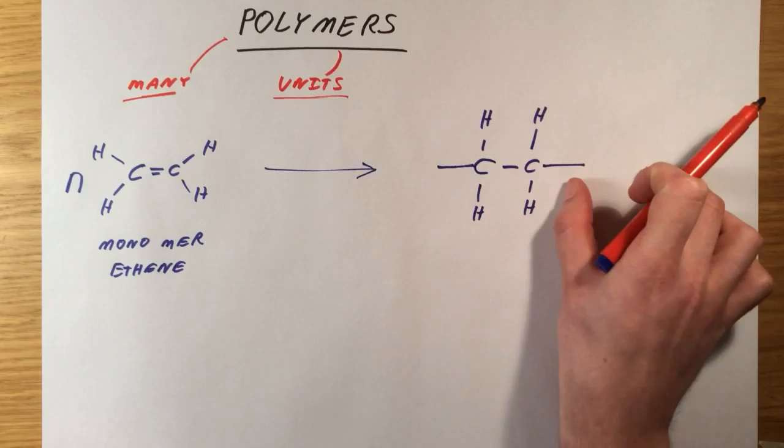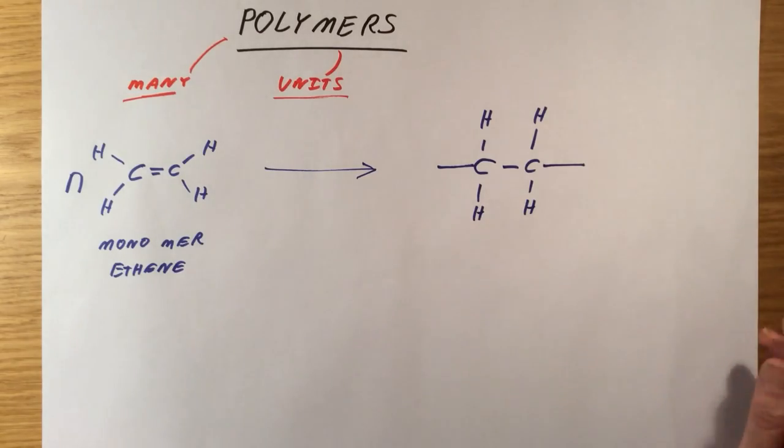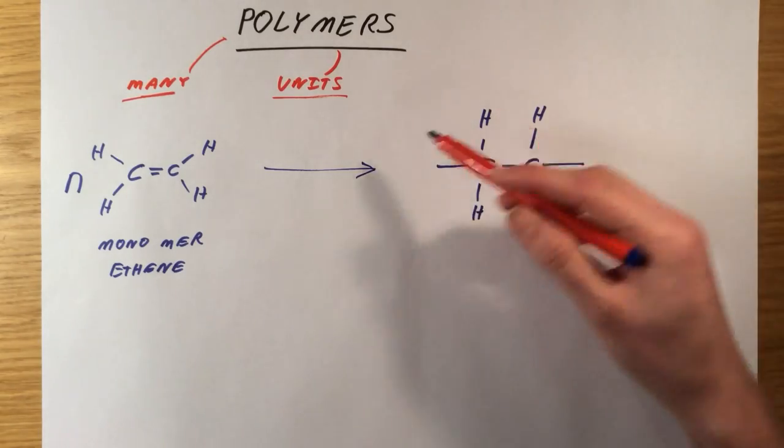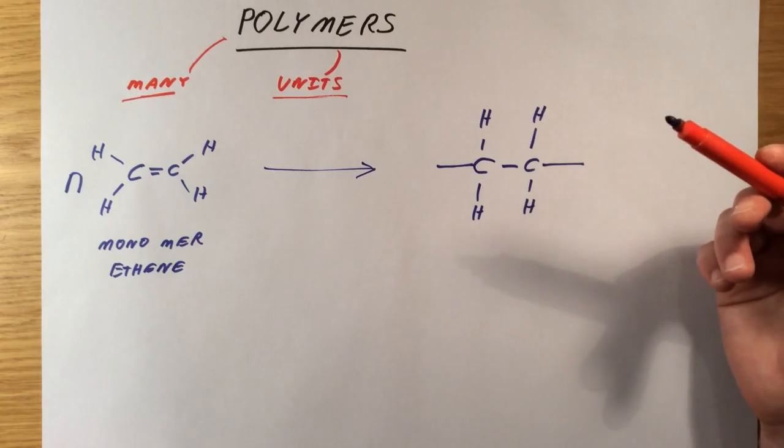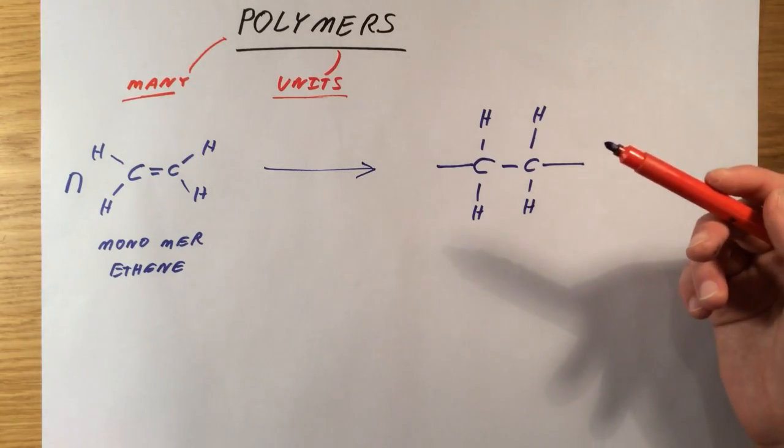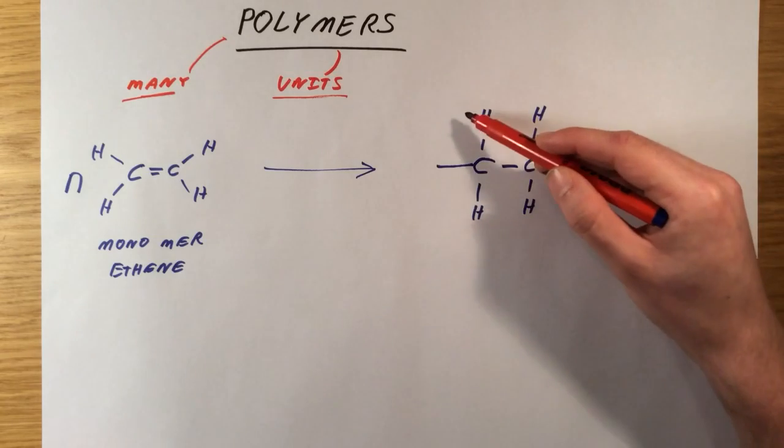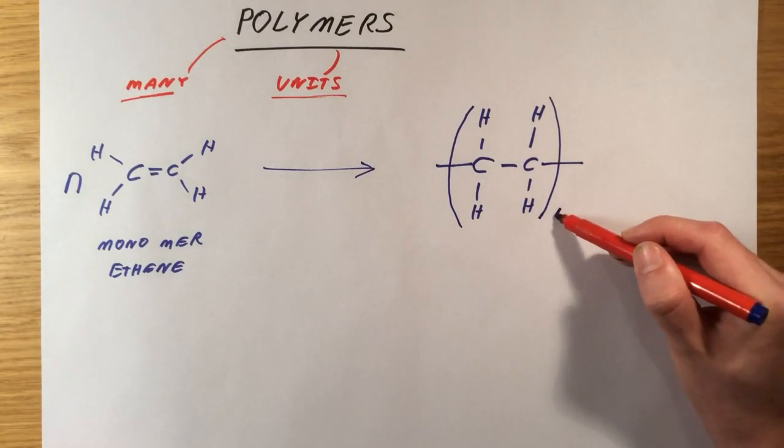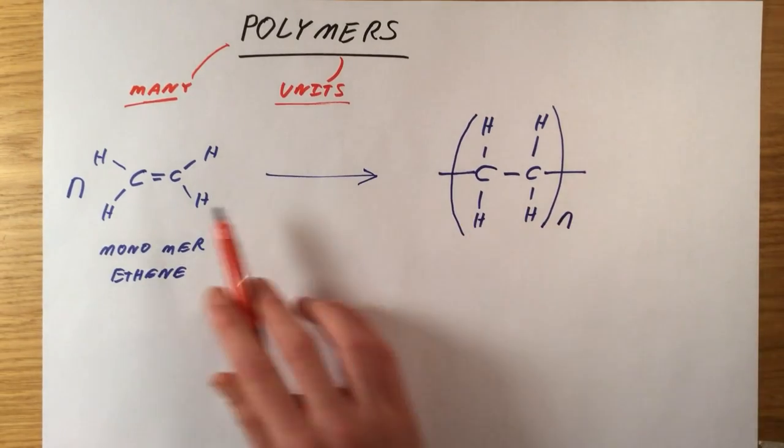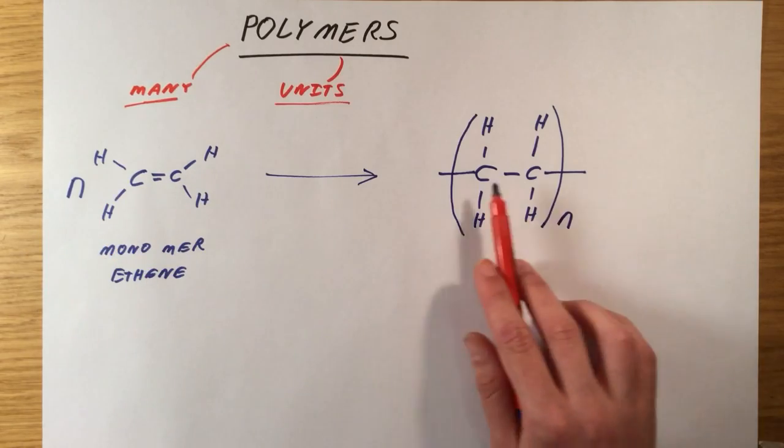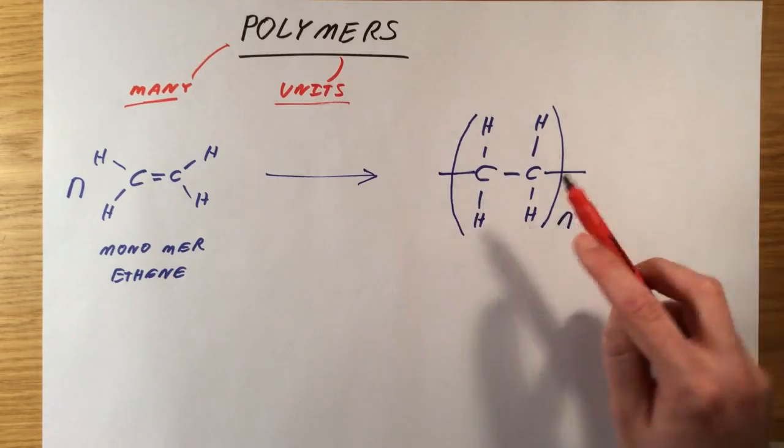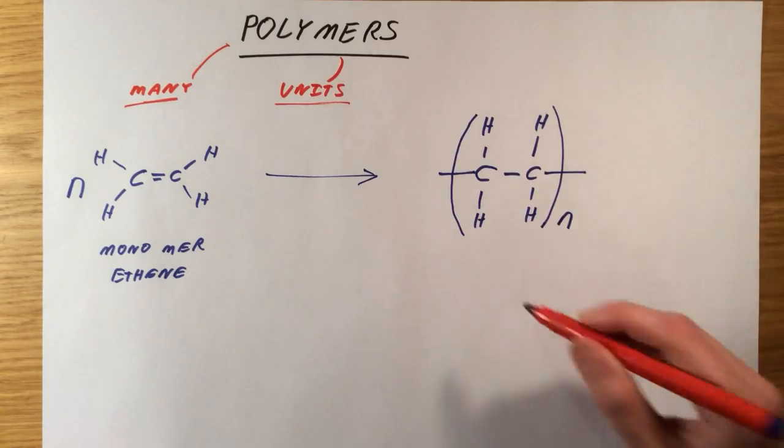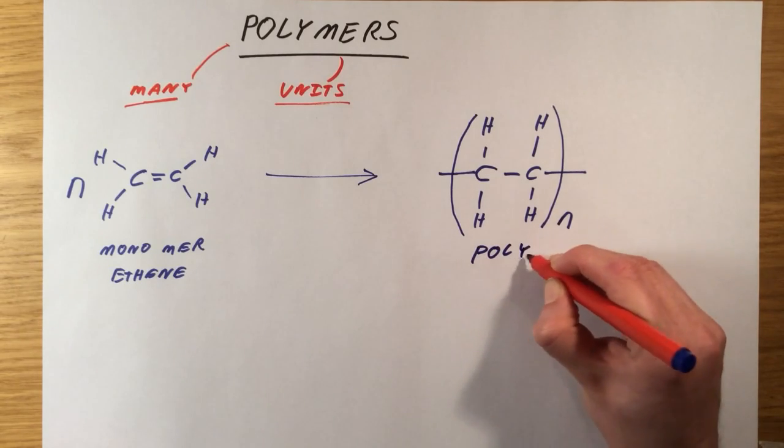This would be joined onto another section which would repeat over and over again. I call this my repeat unit. Because it's a repeat unit, I don't actually have to draw out all of the ethene molecules joined together. How I actually represent it is just by drawing a bracket around this section and putting an N here. I started off with N ethene molecules, my polymer formed has got N repeat units all chained together. I've now formed one giant molecule, which I call my polymer.